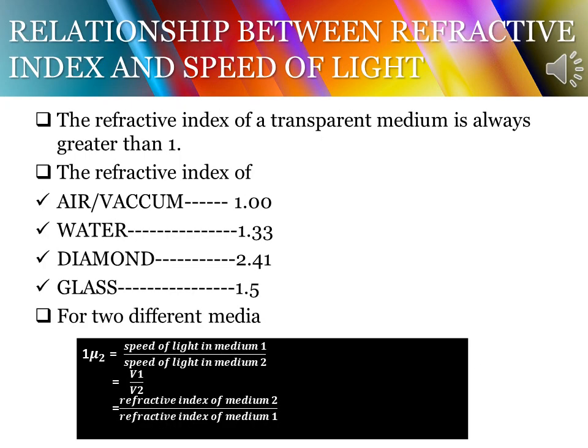The refractive index of a transparent medium is always greater than 1 because the speed of light in any medium is always less than that in vacuum. The speed of light in air or vacuum is always greater than in any other medium. For example, if the refractive index of a medium is 2.41, it means light travels in air 2.41 times faster than in diamond, or the speed of light in diamond is 1/2.41 times the speed of light in air.